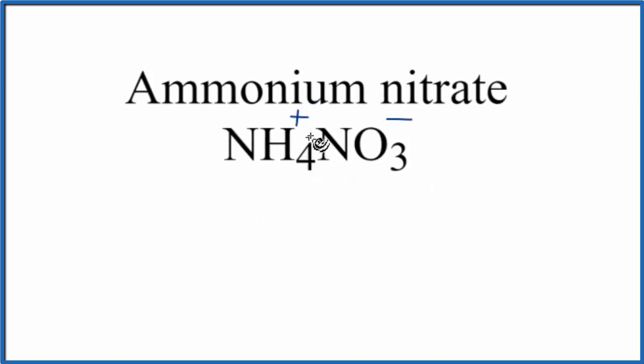But we also do have covalent bonds. So if we look just at the ammonium ion, the bonds between the nitrogen and the hydrogen are covalent bonds. For the nitrate ion, the bond between the nitrogen and the oxygen are also covalent bonds. So within the polyatomic ions, we have covalent bonds.